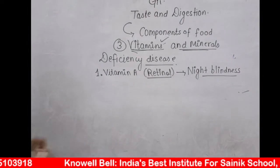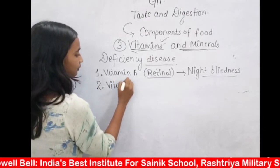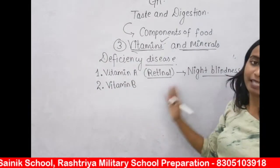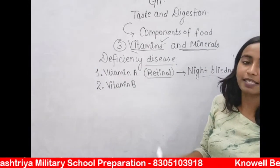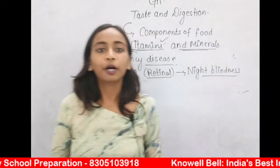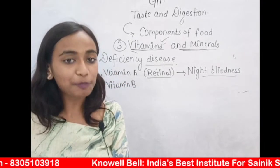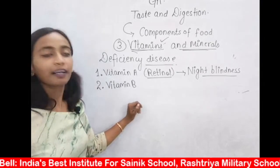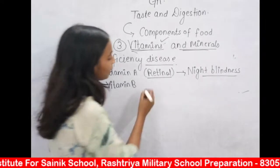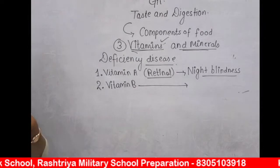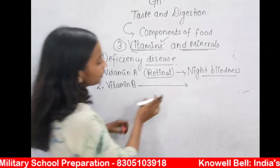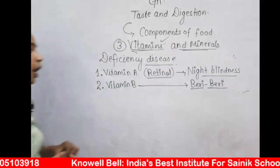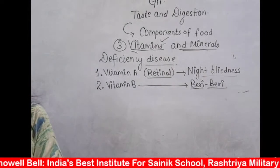The second vitamin is Vitamin B. Vitamin B is not just one vitamin — it actually contains many vitamins like B1, and together these are referred to as B complex. You may have seen B complex tablets and capsules in pharmacies — these are vitamin tablets containing all vitamins present in the Vitamin B group. The deficiency of Vitamin B causes a disease called beriberi. Vitamin B — beriberi, both start with B.